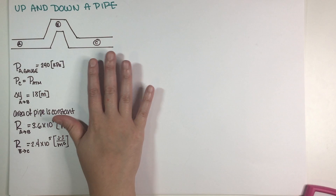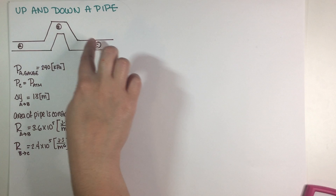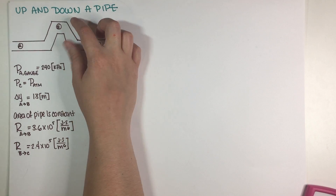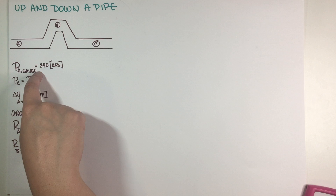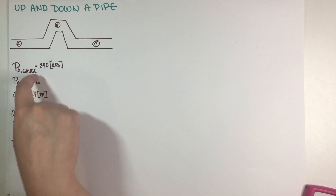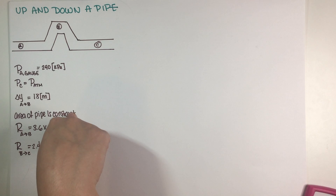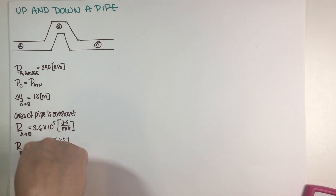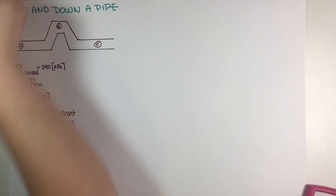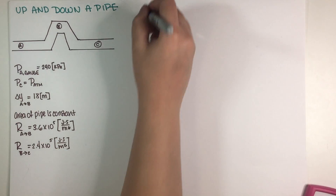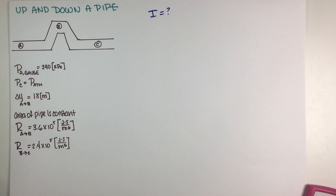As you can see I have everything written down in my notes. I have the drawing of A, B, and C. The change in height is equal to 18 meters. We have a gauge pressure at A and atmospheric pressure at C. The area of the pipe stays constant and we have both resistances. The first thing they're asking us to figure out is: what is the current in the pipe?